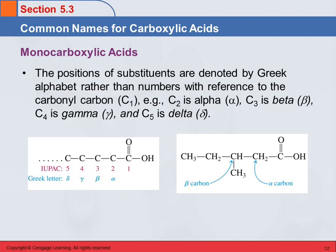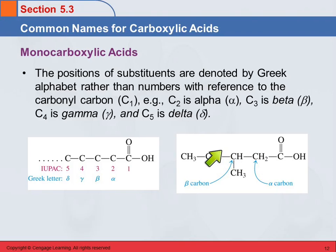Have you heard of alpha hydroxy acids? They're very common in anti-wrinkle creams and facial products. These are carboxylic acids with a hydroxyl group on the alpha carbon, which is carbon number two. So here's a specific example: the carboxyl carbon has no letter, then this is alpha, beta, gamma, and delta. We won't go any farther than that with the Greek alphabet.